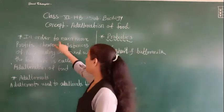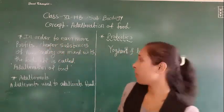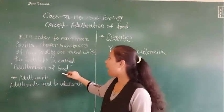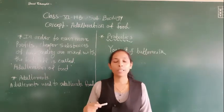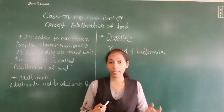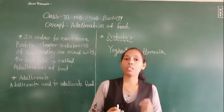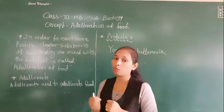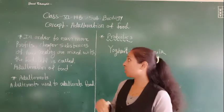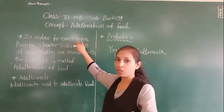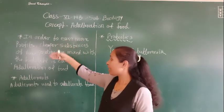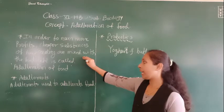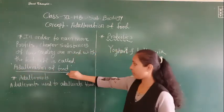So in order to earn more profits, cheaper substances of low quality are mixed with the food stuff — this is called adulteration of food. Nowadays, as we know, the population of our country is increasing day by day, and to fulfill their basic need while giving less investment, persons who want to take more profit are doing adulteration of food.